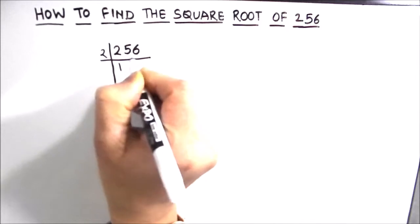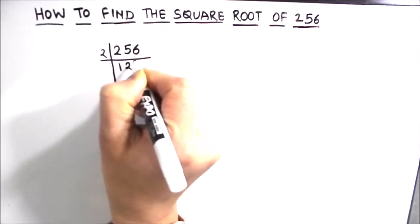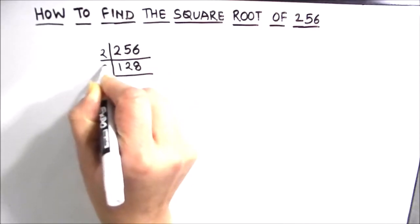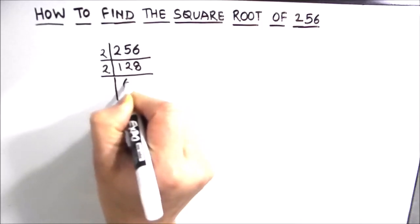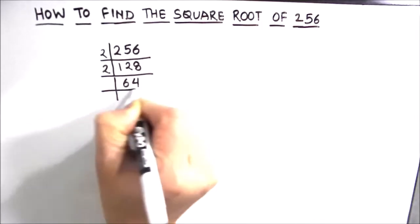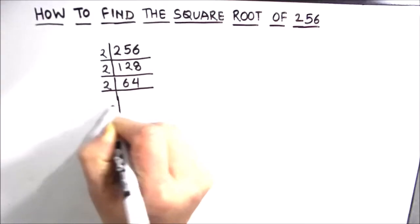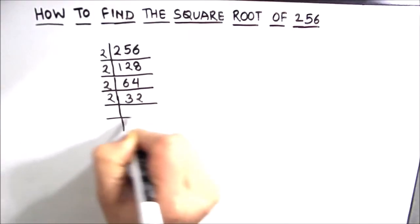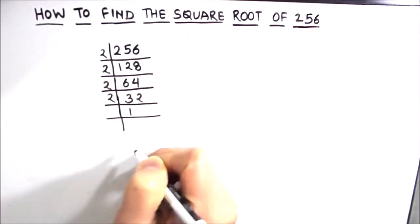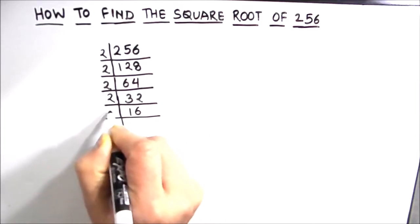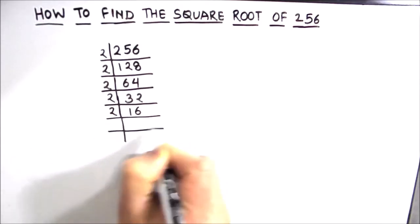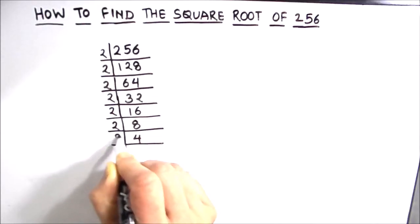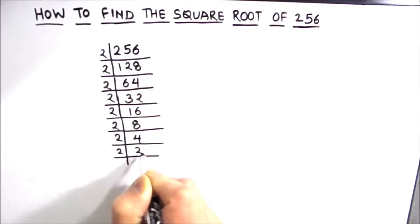2 times 1 is 2, 2 times 2 is 4, 1 is remainder, this becomes 16. 2 times 8 is 16. Now again we can divide by 2. 2 times 6 is 12 and 2 times 4 is 8. 2 times 3 is 6 and 2 times 2 is 4. 2 times 1 is 2 and 1 is remainder, this becomes 12. 2 times 6 is 12. 2 times 8 is 16. 2 times 4 is 8. 2 times 2 is 4 and 2 times 1 is 2.